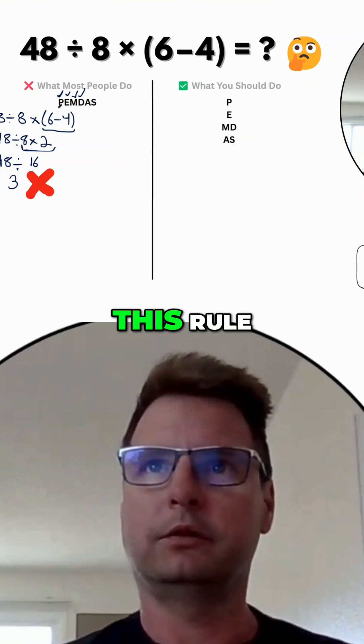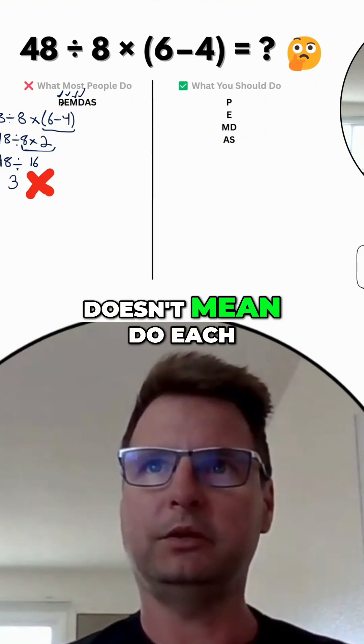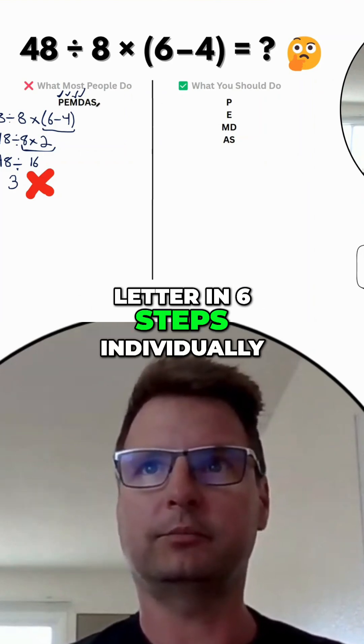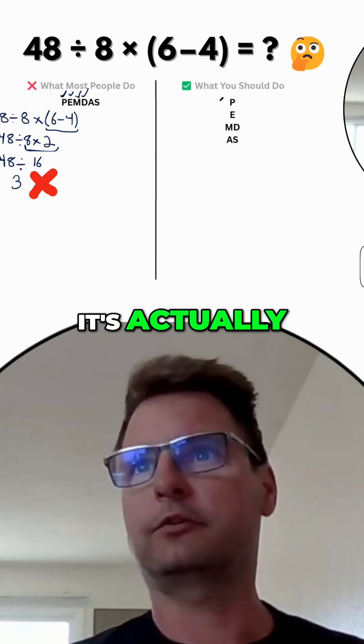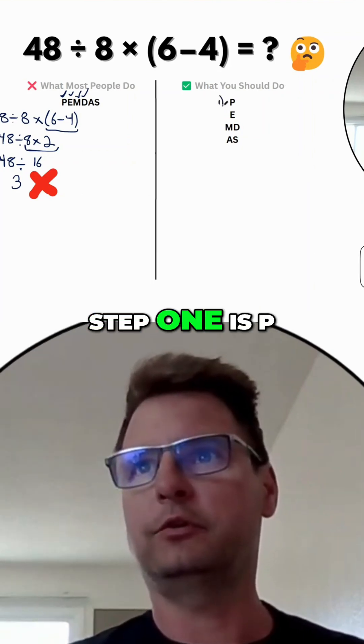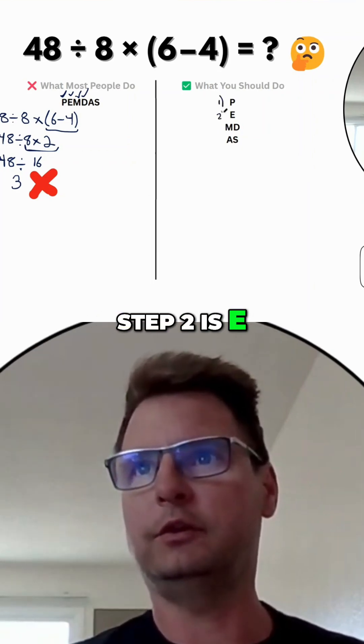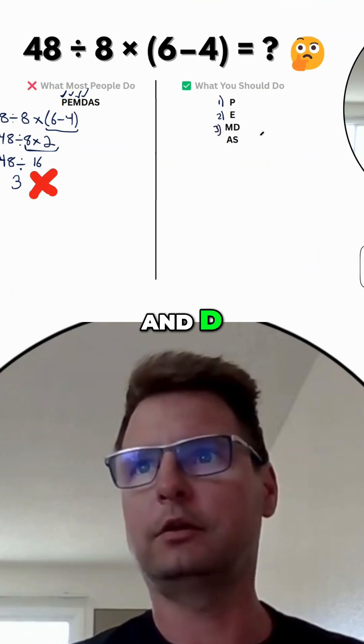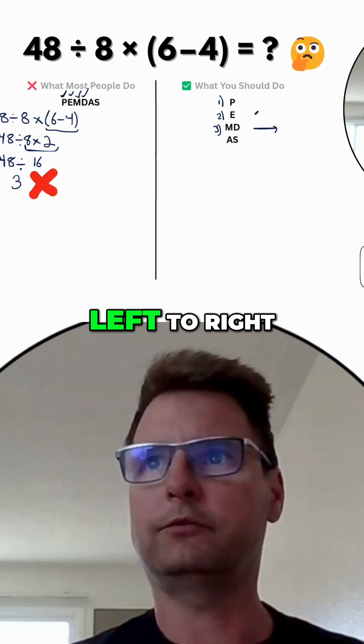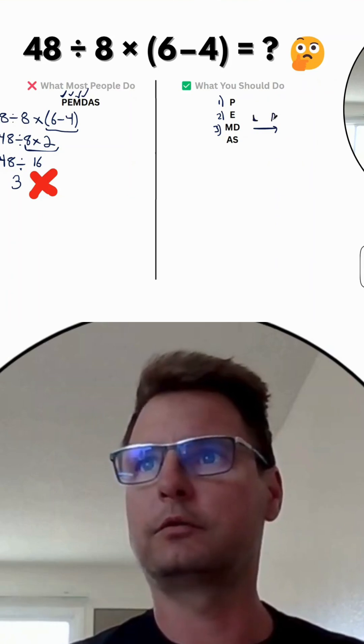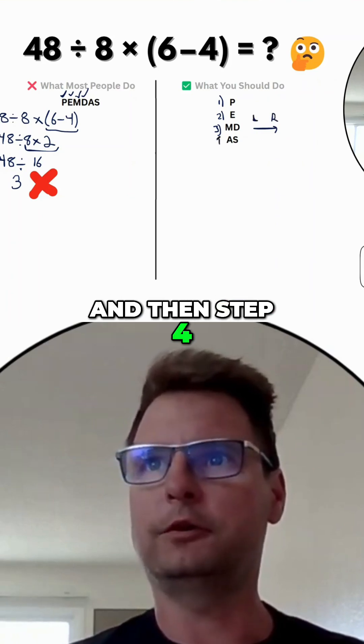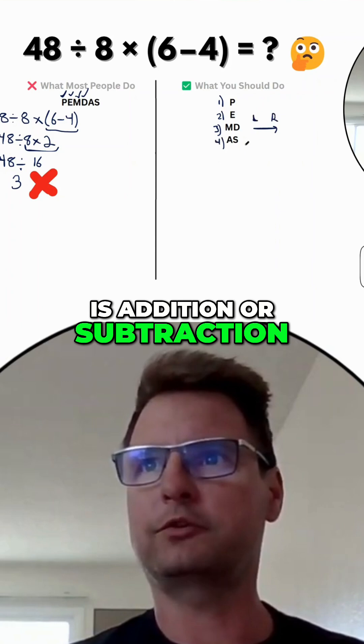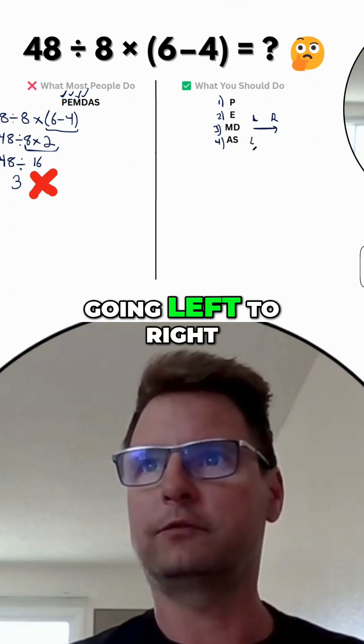Well, this rule doesn't mean do each letter in six steps individually, one at a time. Actually step one is P, step two is E, step three is M and D, but you go left to right. And then step four is addition or subtraction going left to right.